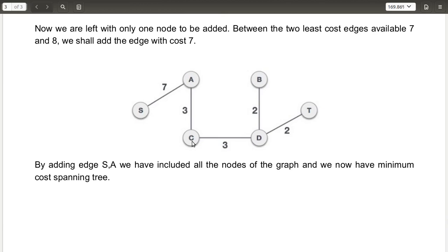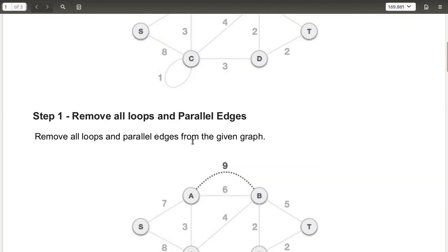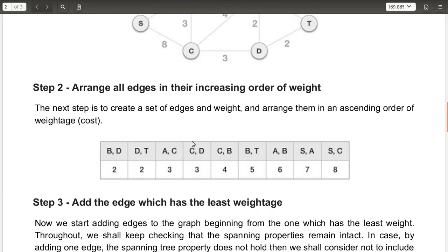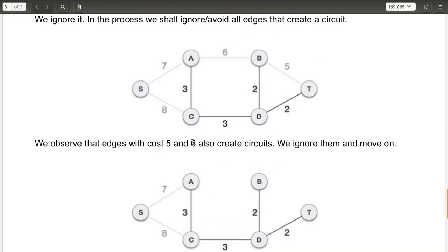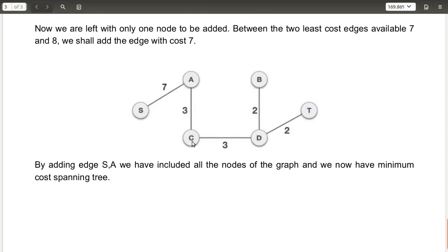Finally, all nodes are connected and we have the minimum spanning tree. To summarize the steps: first, remove loops and parallel edges; second, arrange all edges in increasing order of weight; third, connect edges starting with the least weight. When adding edges, if adding one creates a loop, avoid that edge. Be sure that all nodes are included in the final minimum cost spanning tree.